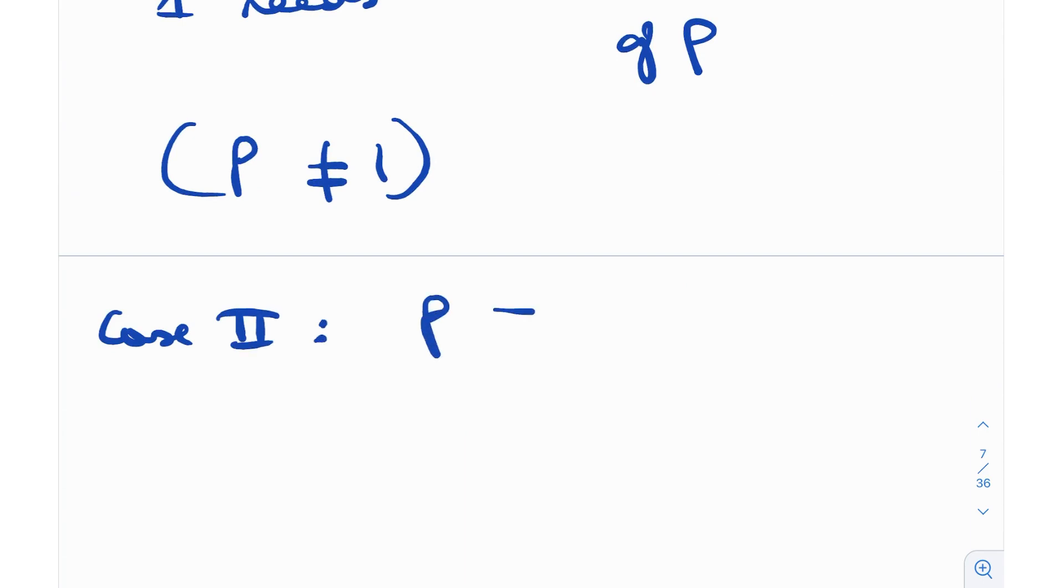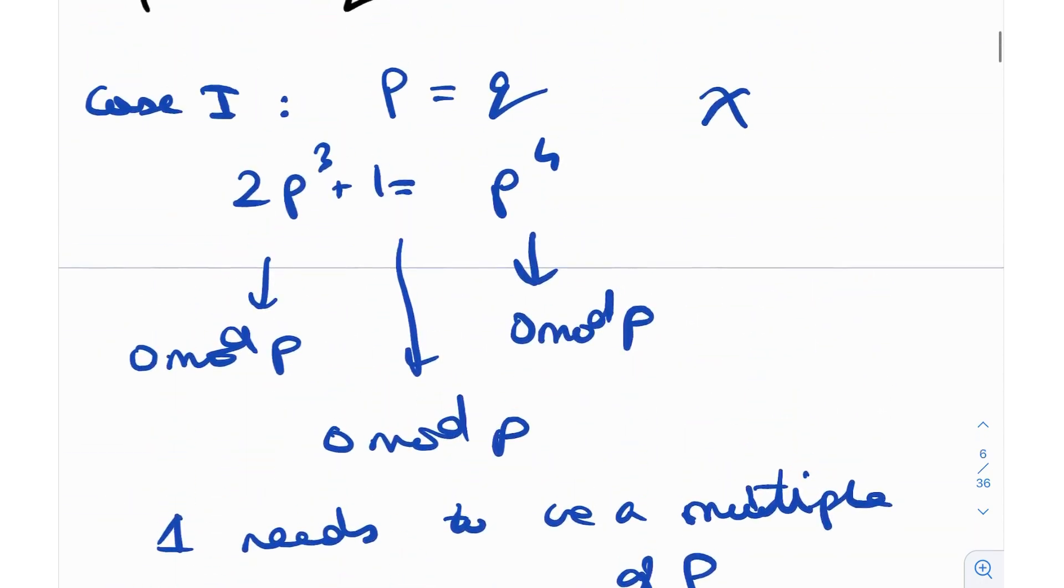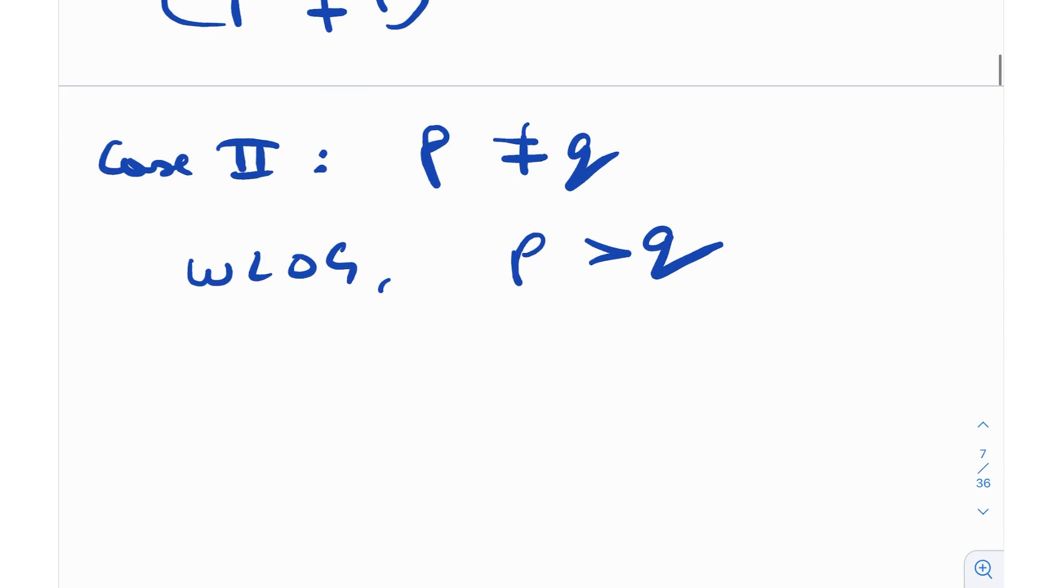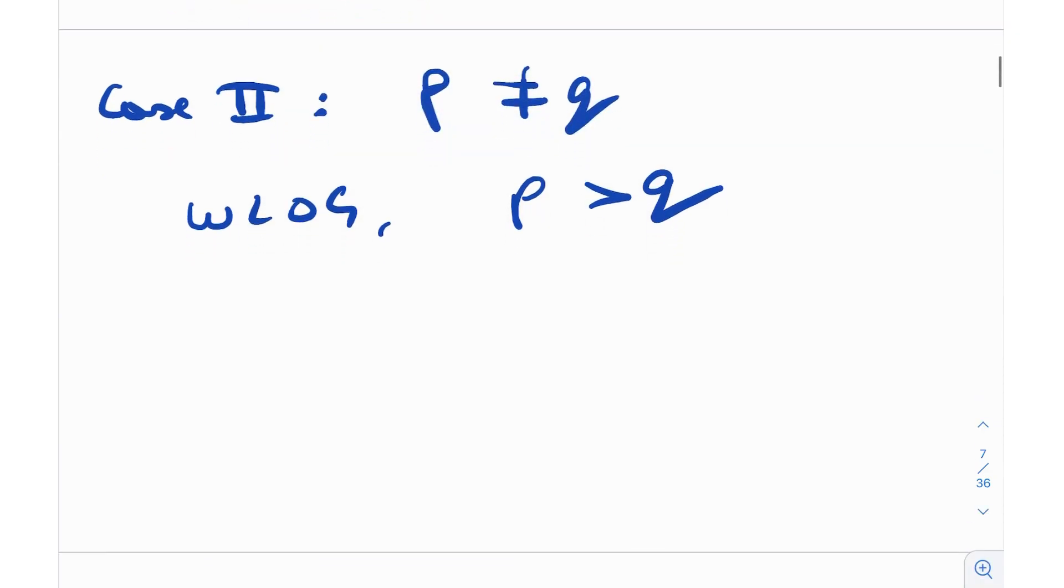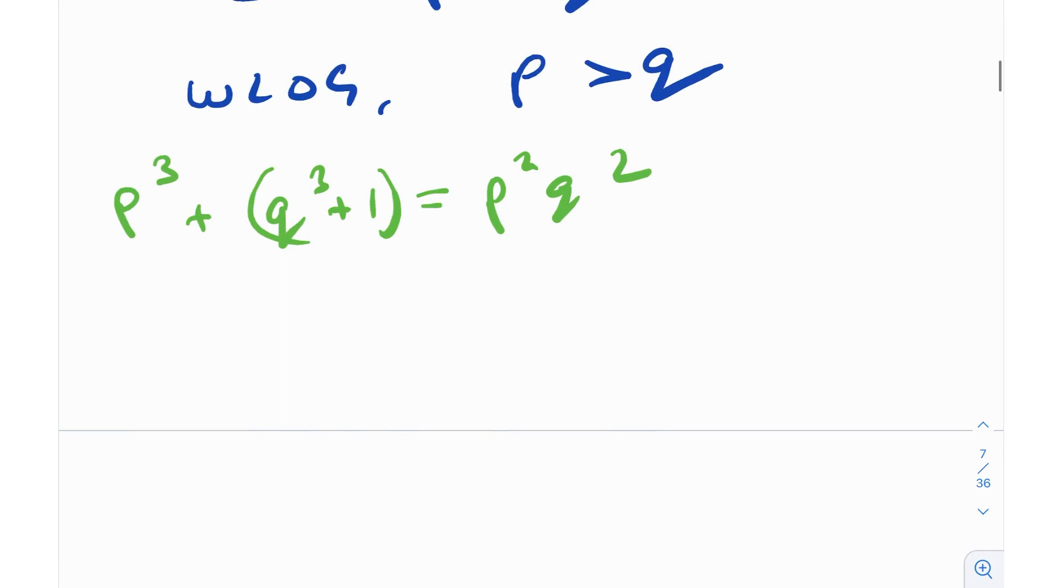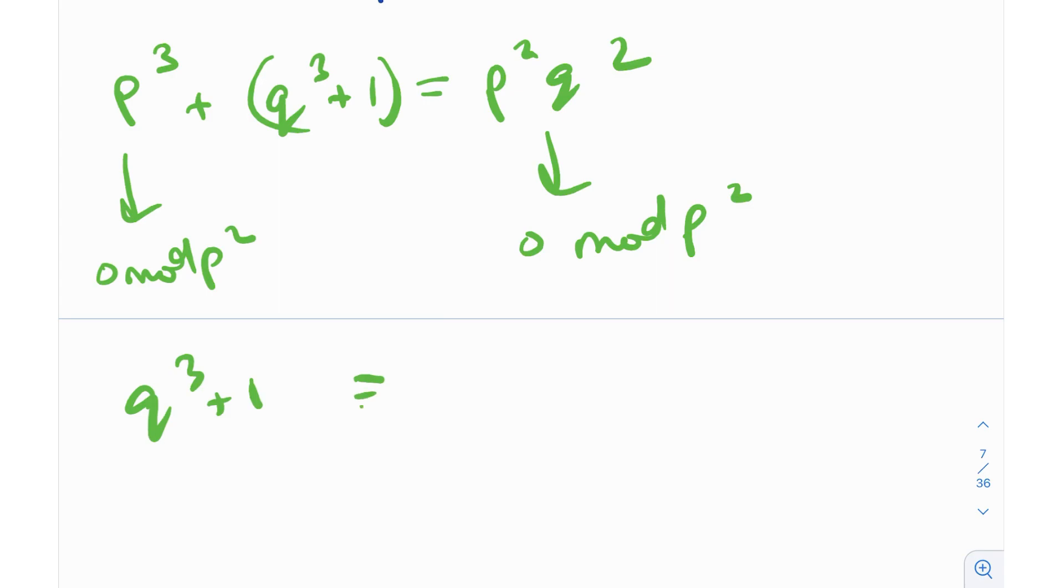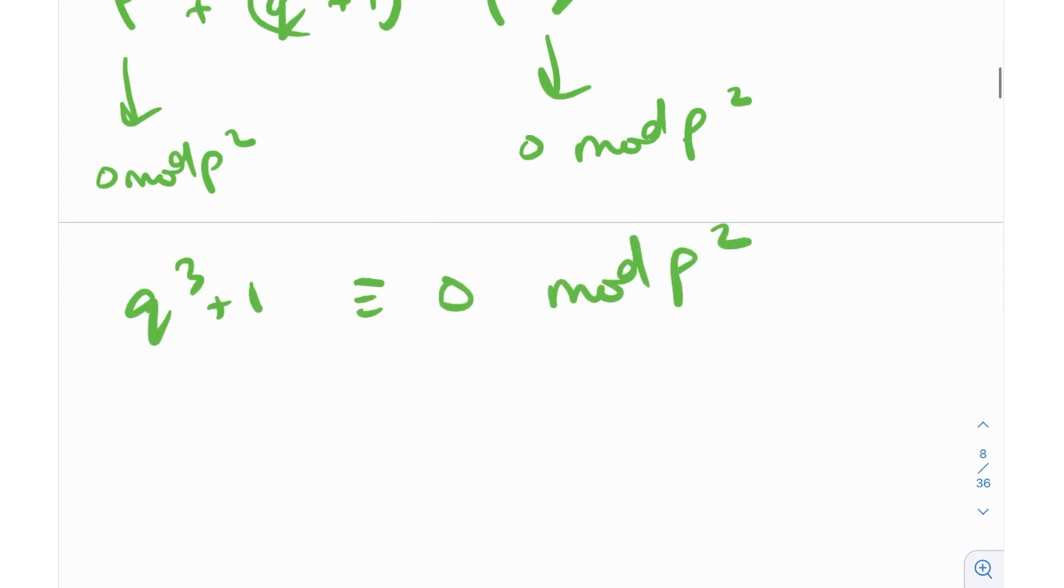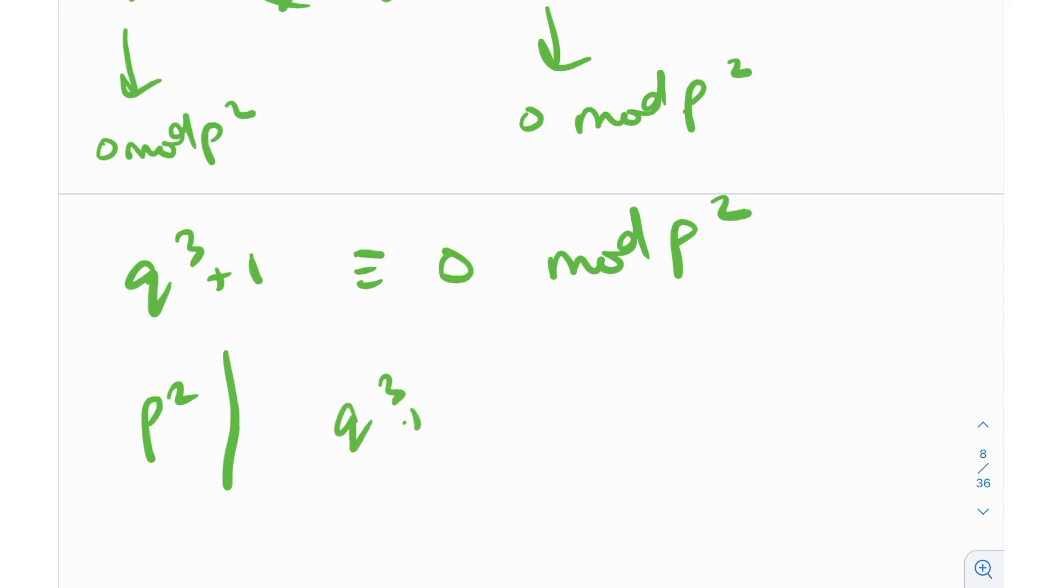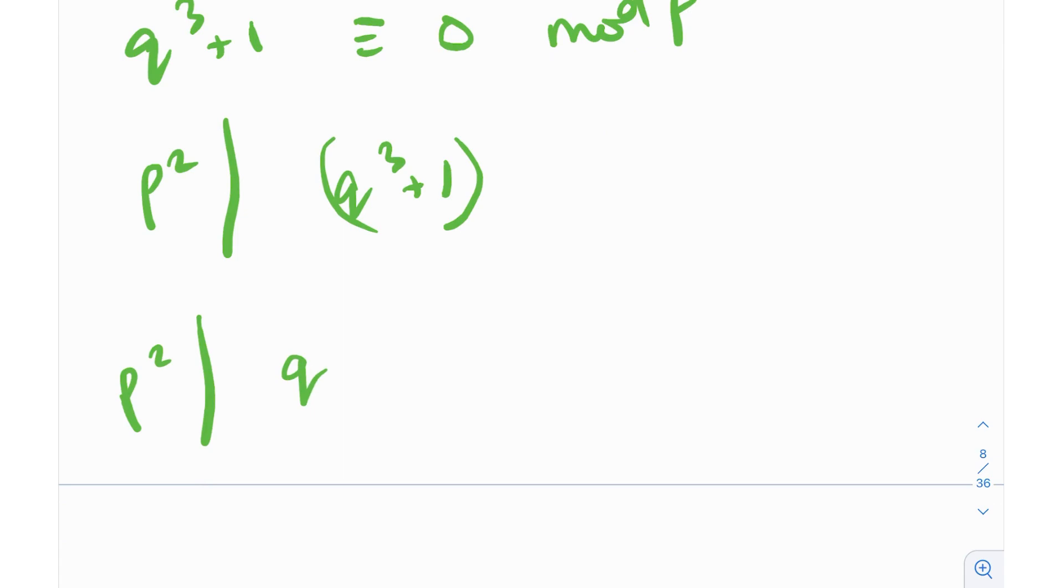Case number two is p is not equal to q. Because this is a symmetric expression, without loss of generality I can assume that p is greater than q. So p^3 + q^3 + 1 = p^2 q^2. This is zero mod p^2, so effectively q^3 + 1 also needs to be zero mod p^2. In other words p^2 needs to divide this quantity. And this is essentially the sum of cubes, so this can be factorized as (q + 1)(q^2 - q + 1).